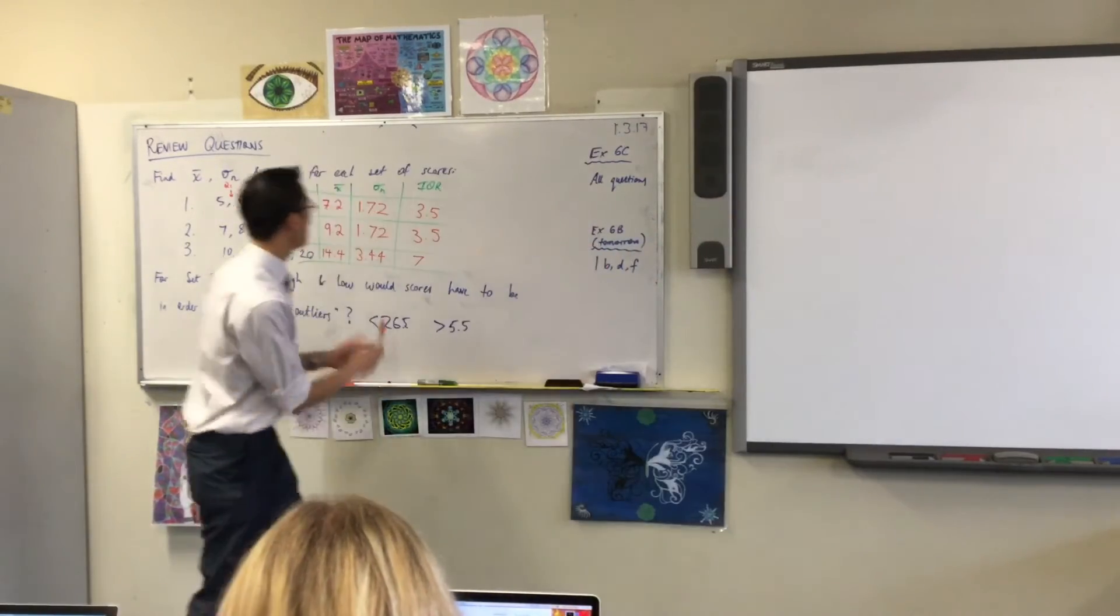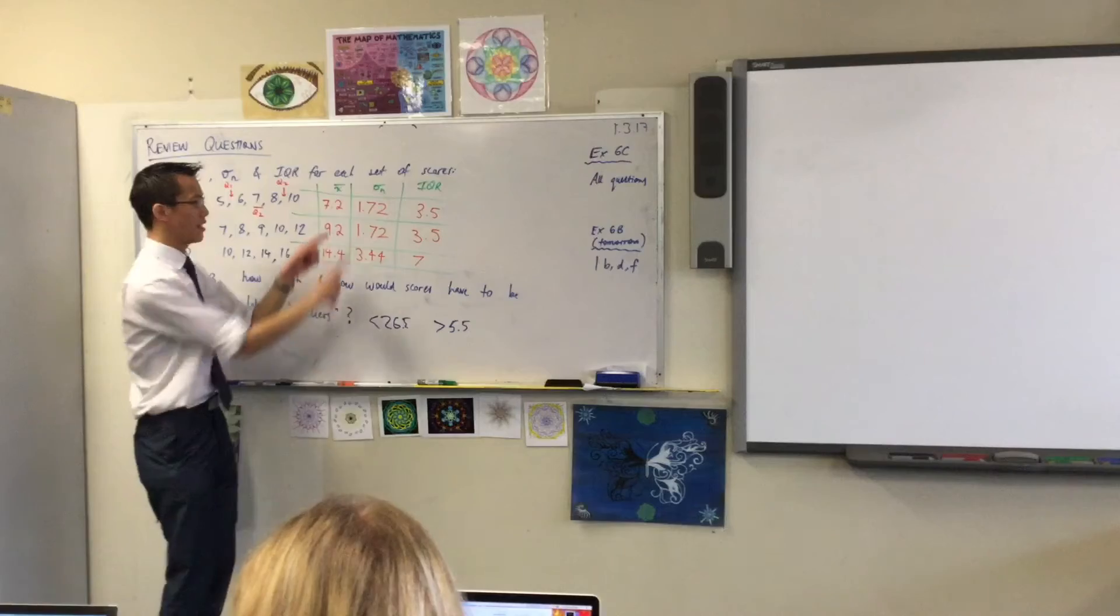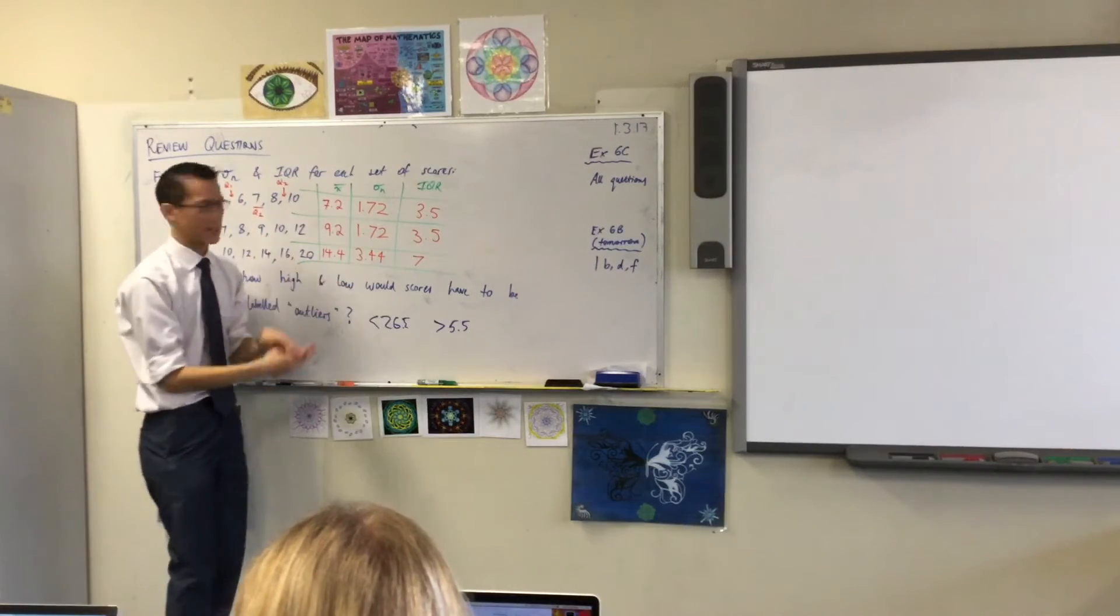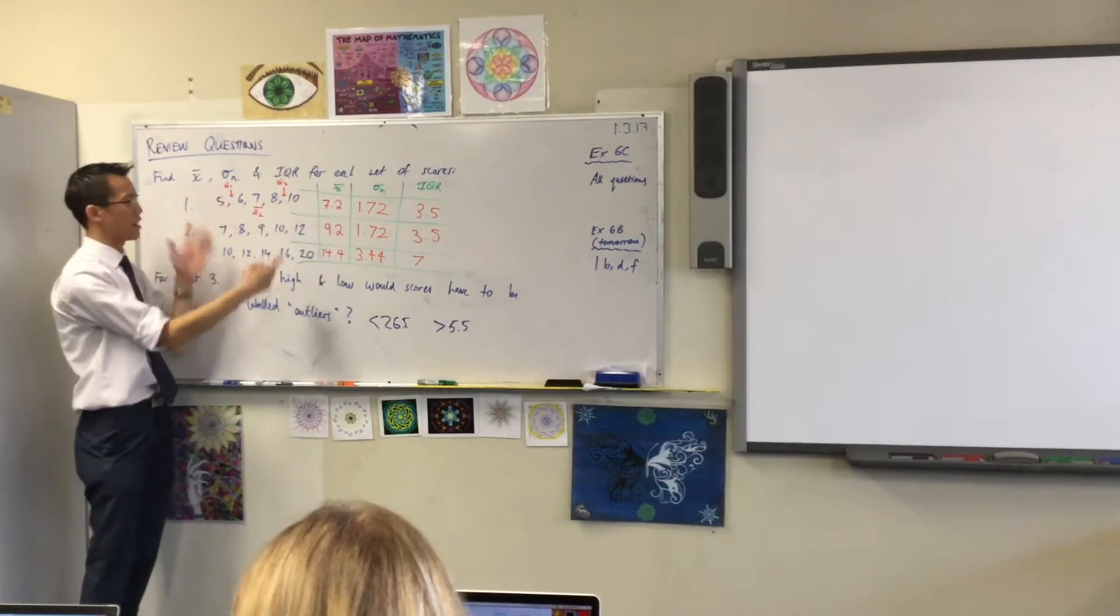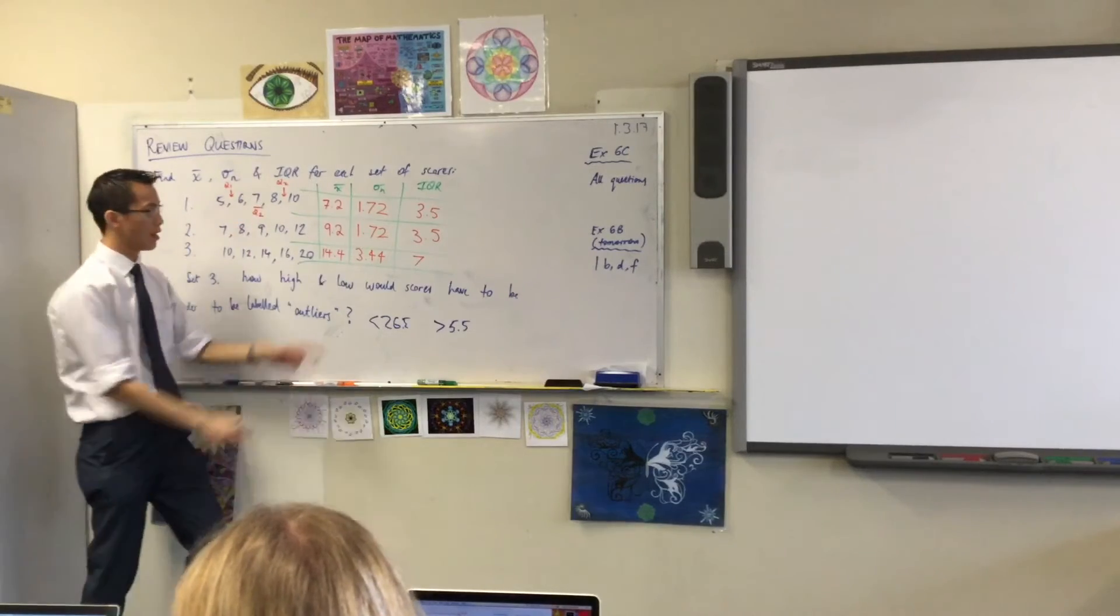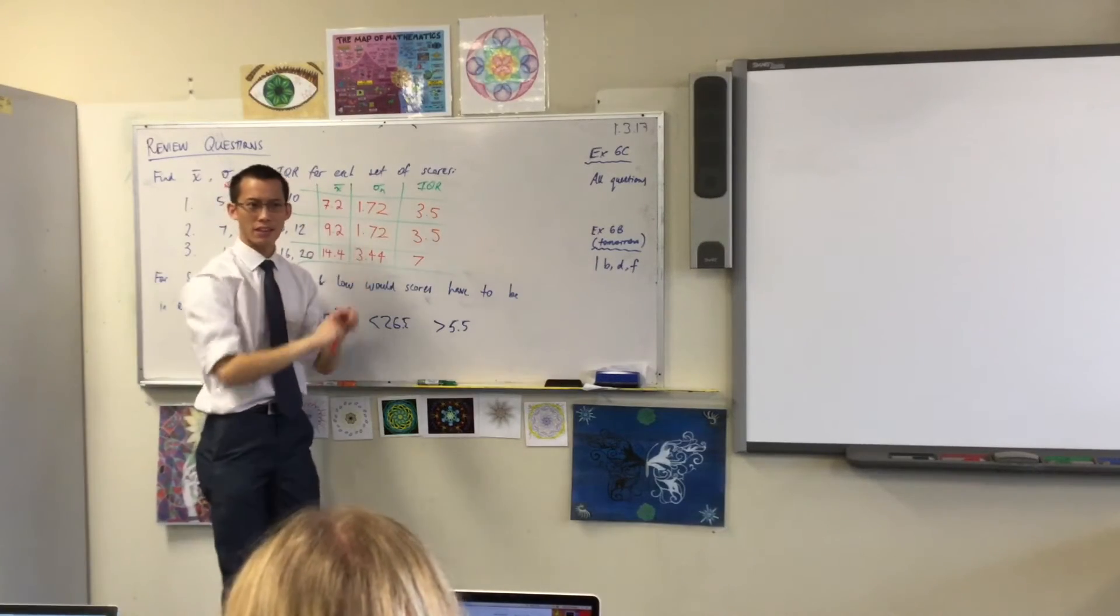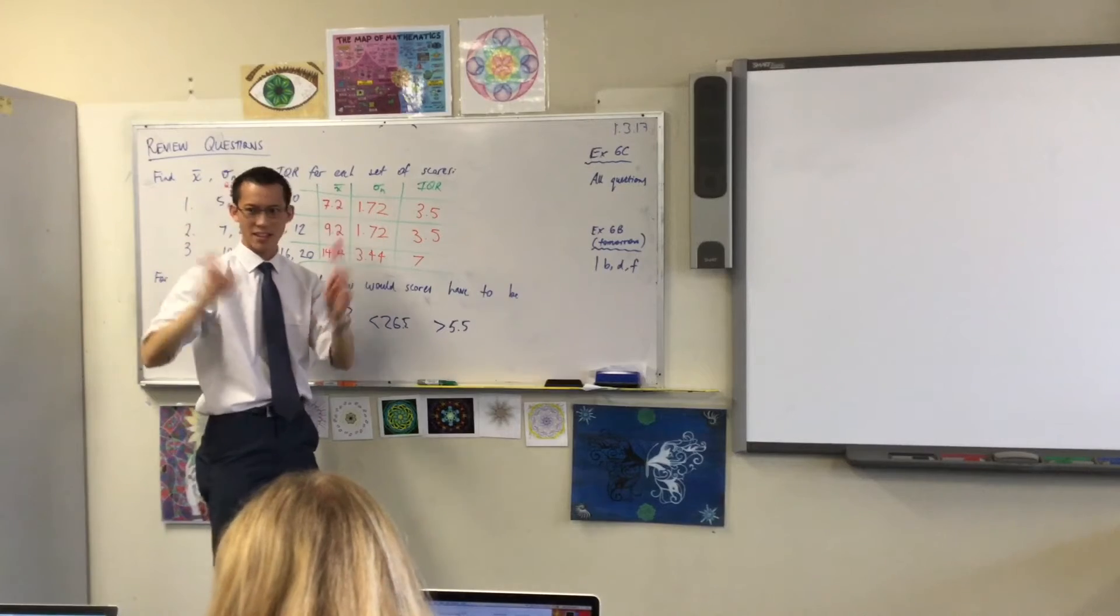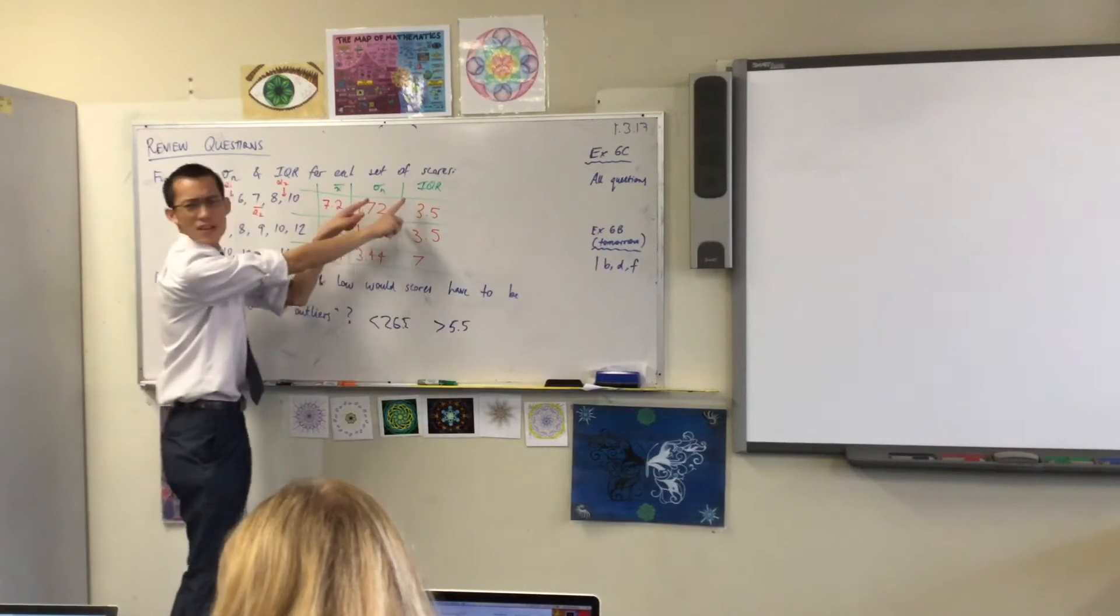Do you remember, even though we sort of put all of them together, the mean is a measure of location. It's like where's the center of this group, and 7.2 is the center. But these are not measures of location. They're not measures of the center or central tendency. What are they measures of?